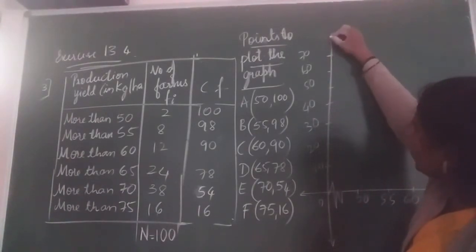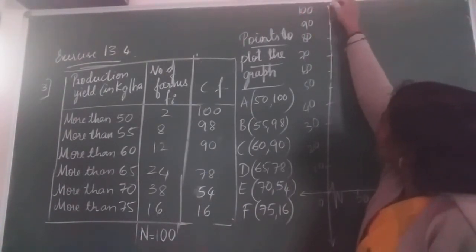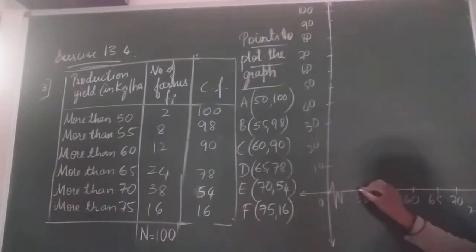One unit you have to take as 10. So 80, next is 90, and 100. Now start plotting the points.